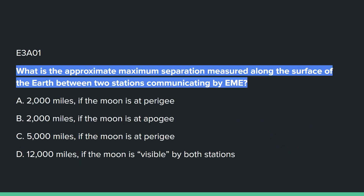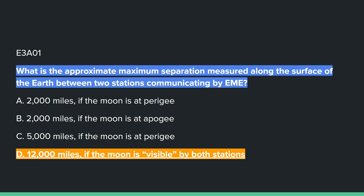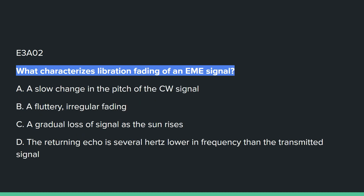E3A01: What is the approximate maximum separation measured along the surface of the Earth between two stations communicating by EME? Answer is D: 12,000 miles, if the moon is visible by both stations. E3A02: What characterizes libration fading of an EME signal? B: a fluttery, irregular fading.